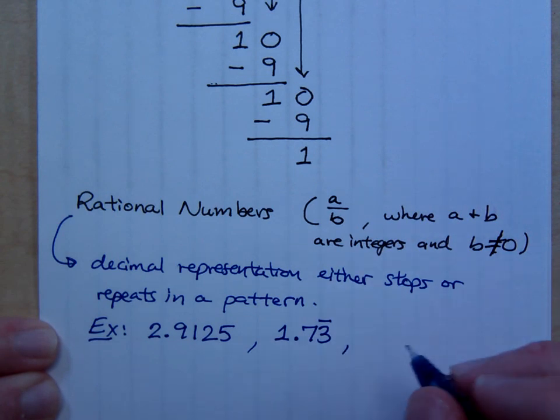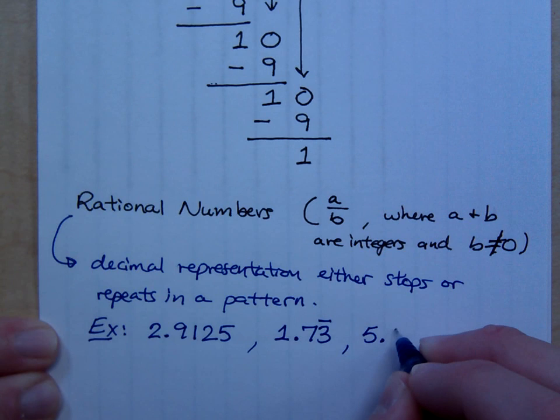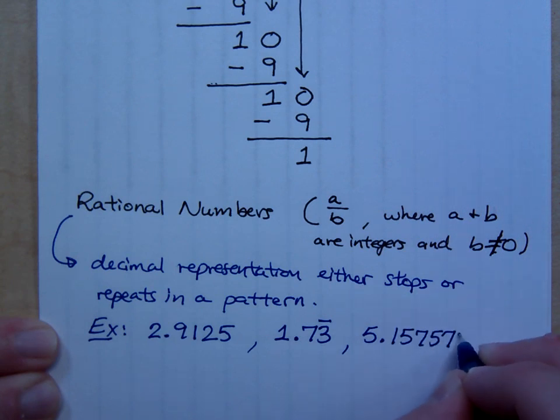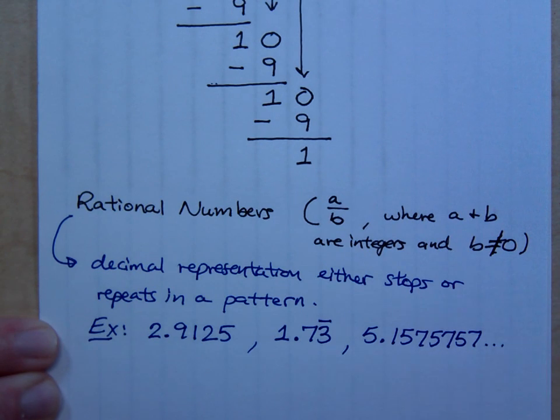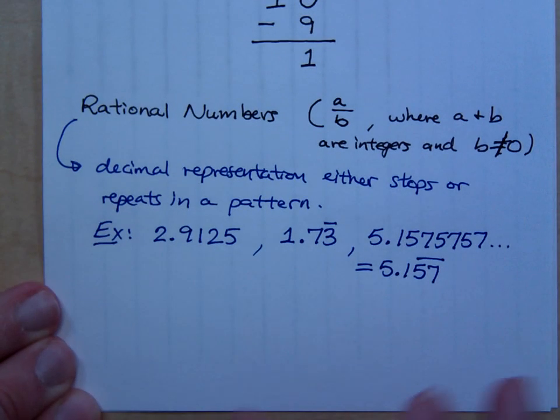You might even see something like this where it would be, say, 5.157, 5.757, and so on. Now, you may not keep writing out all those numbers, but you might say this, 5.1, and it's the 5.7s that repeat. So, you put the repeating bar over the 5 and the 7. So, those are rational numbers.